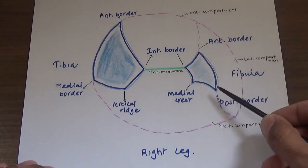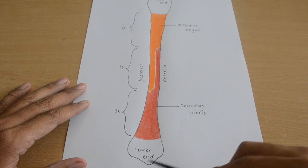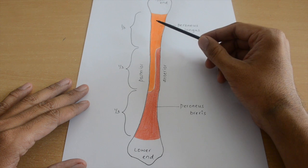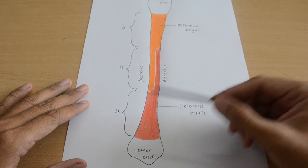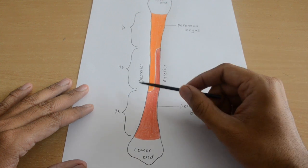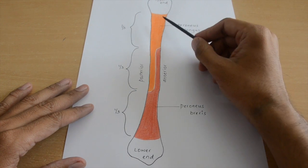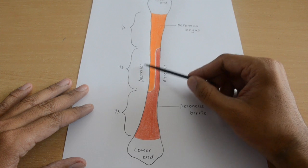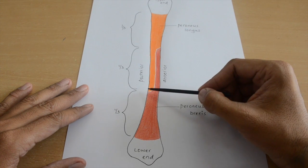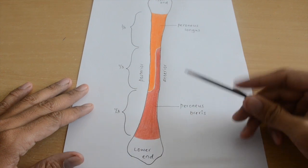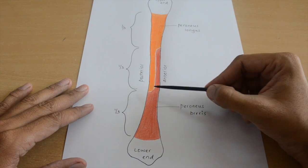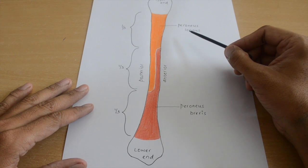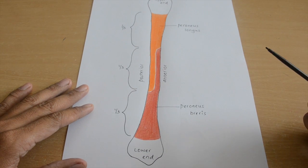For the lateral surface, which extends between the anterior and posterior borders: dividing it into upper third, middle third, and lower third — peroneus longus takes origin from the entire upper third and the posterior half of the middle third of the lateral surface. From the anterior half of the middle third and the entire lower third, peroneus brevis takes origin. So two muscles — peroneus longus and peroneus brevis — originate from the lateral surface.